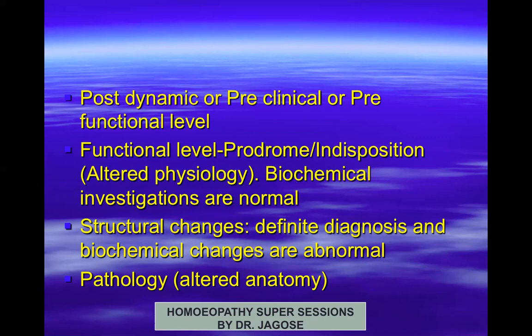Homeostasis is maintained in the body by the harmonious functioning of the psychoneuroendocrine system (the PNE axis) and the reticuloendothelial system (RES). The vital force balances the internal milieu of the whole body to maintain health, working in harmony with both the internal environment — digestion, respiration, assimilation, anabolism, catabolism — and the external environment including physical, chemical, biological, and psychosocial-cultural causes.